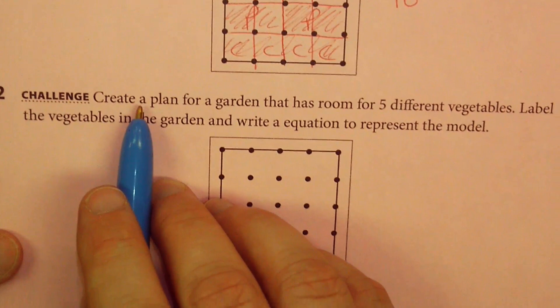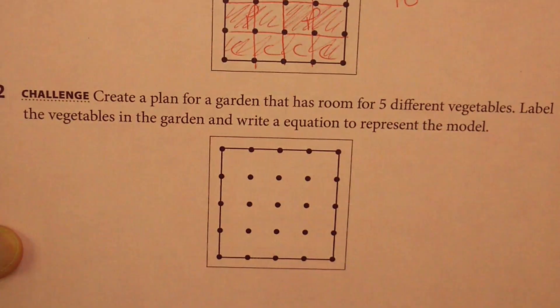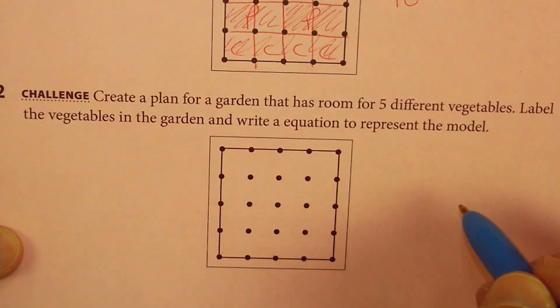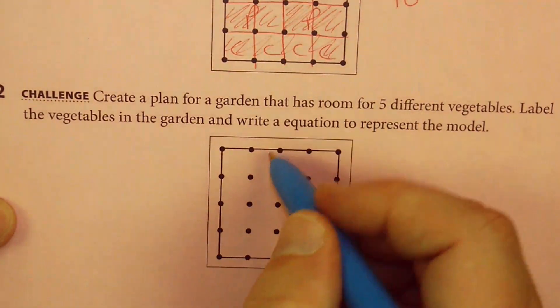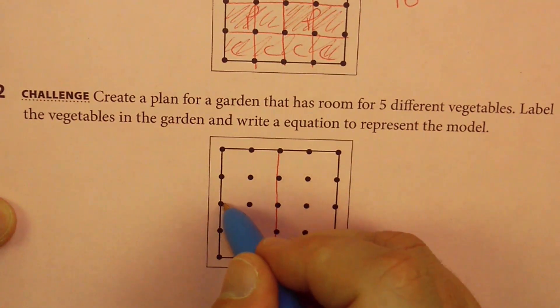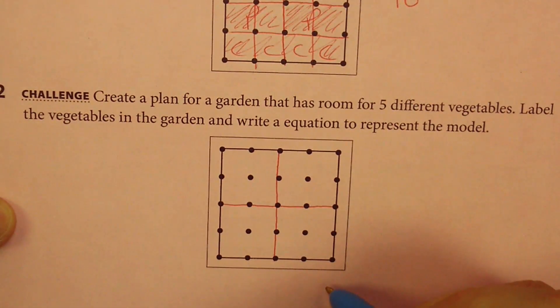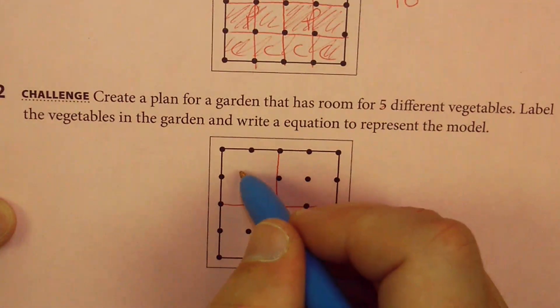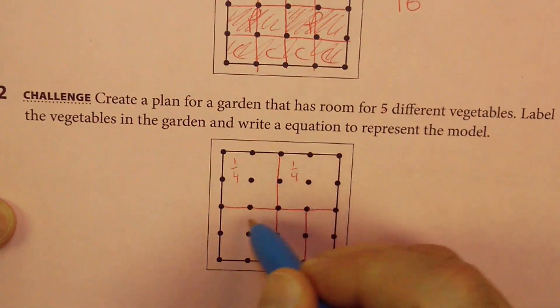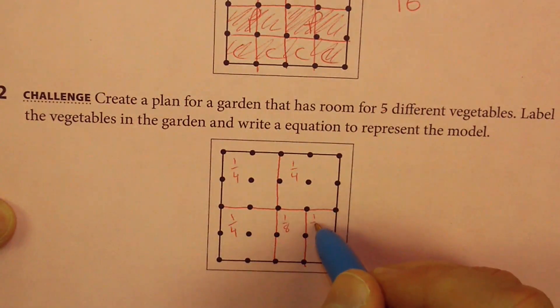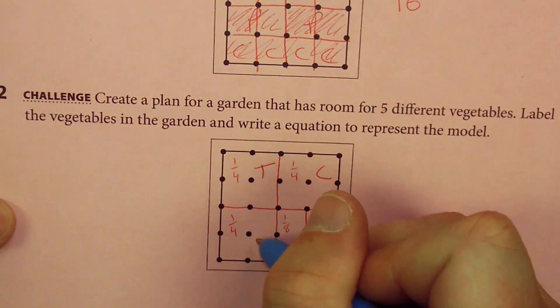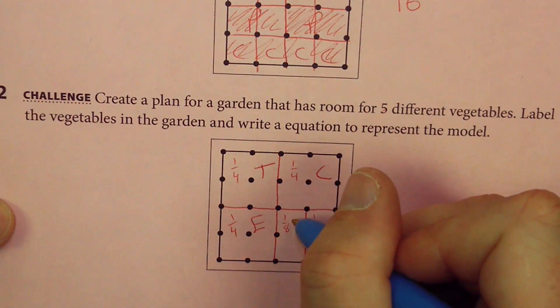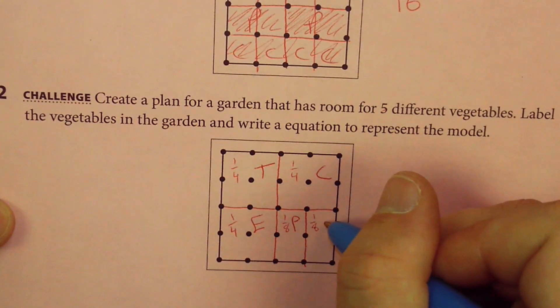Create a plan for a garden that has room for five different vegetables. Label the vegetables in the garden and write an equation to represent the model. Five different vegetables. Well, we might need some smaller pieces here. So when you go through here, that's four pieces. I need five. So maybe I'll just split one of these, maybe like this. So this is a fourth. So if I wanted to, I could say I've got tomatoes, I've got cucumbers, I have eggplants, I have parsnips, and I have squash.